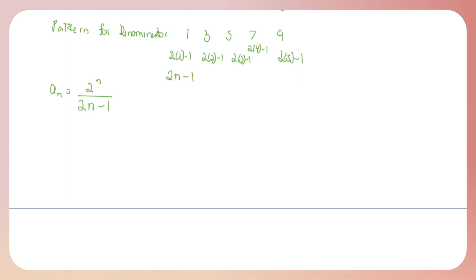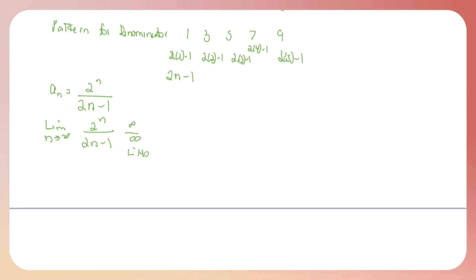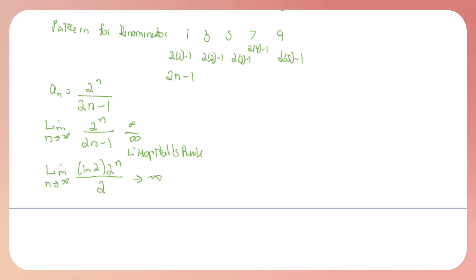Now to figure out if this has a limit — whether it converges — let's evaluate the limit of this sequence. The limit as n goes to infinity of two to the n over two n minus one. This gives us the infinity over infinity indeterminate form. So let's try L'Hôpital's rule to evaluate this limit. The derivative of two to the n is the natural log of two times two to the n, and the derivative of two n minus one is simply two. The numerator keeps getting larger and larger, so this goes to infinity. Since the limit goes to infinity, the sequence diverges.